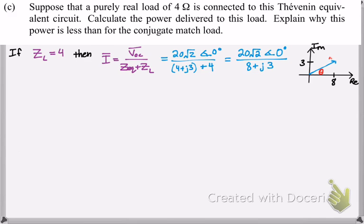You can calculate the angle theta by using trigonometry. And you should get theta to be 20.6 degrees. And you can use the Pythagorean theorem to calculate the magnitude of that phasor. And that is radical 73.